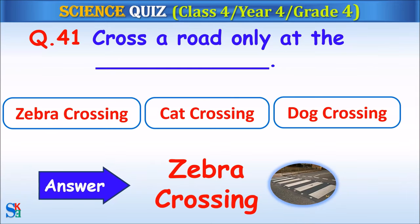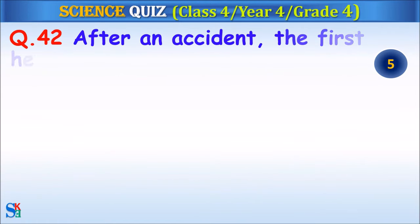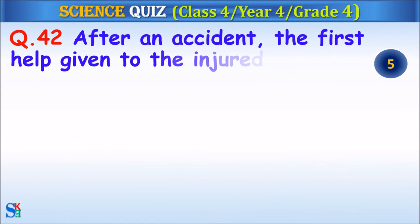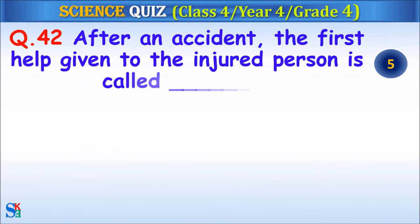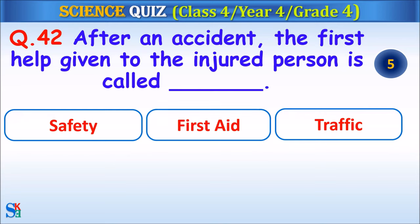Question 42: After an accident, the first help given to the injured person is called — safety, first aid or traffic? Your time starts.